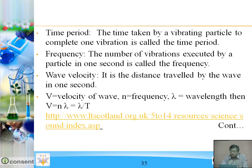Time period: the time taken by a vibrating particle to complete one vibration is called the time period. Frequency: the number of vibrations exhibited by a particle in one second is called the frequency. Wave velocity: it is the distance travelled by the wave in one second. In time period T, the wave travels a distance lambda. So velocity = lambda/T. Since 1/T is frequency, the formula becomes v = nλ.